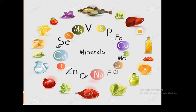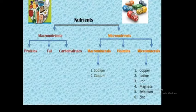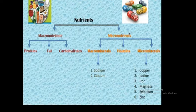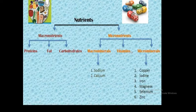They are called essential minerals. Sometimes they are divided into macrominerals and microminerals. Nutrients are divided into macronutrients and micronutrients. Macronutrients are those which the body needs in large amounts, like protein, fats, and carbohydrates. Micronutrients are those minerals or nutrients needed in small amounts, like microminerals and vitamins. So macro means large amounts and micro means small amounts.